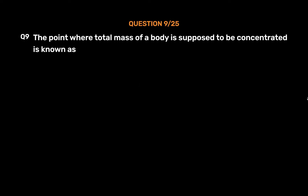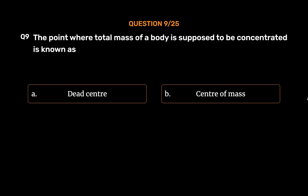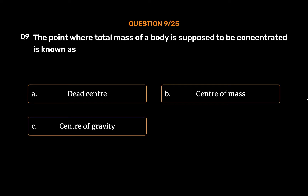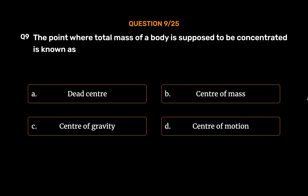Question No. 9. The point where total mass of a body is supposed to be concentrated is known as... Option A: Dead center. Option B: Center of mass. Option C: Center of gravity. Option D: Center of motion.